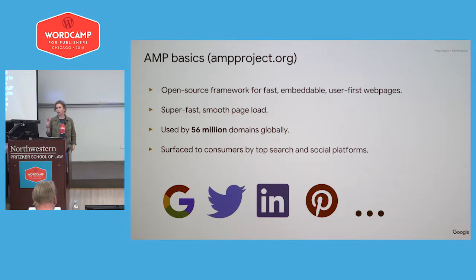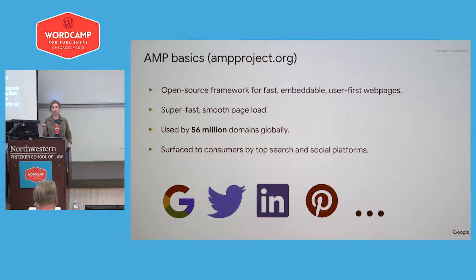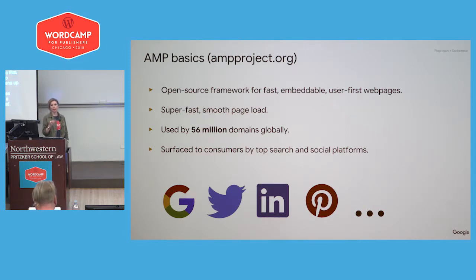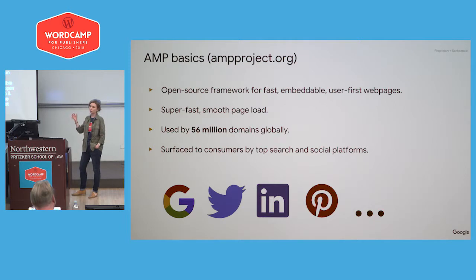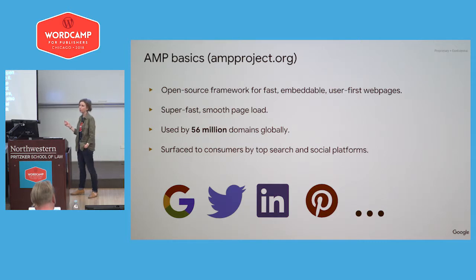The quick elevator speech for AMP: it's an open-source framework for web pages that are not only fast but also embeddable, which opens up new distribution and monetization opportunities for publishers, offering a smooth and fast page load. It's now used by 56 million domains globally. Because AMP is accessible on the open web, anybody can link to it — and more and more large platforms are. We see search and social platforms globally choosing to link to AMP pages when they're available, because they see in their metrics that it leads to more user engagement.